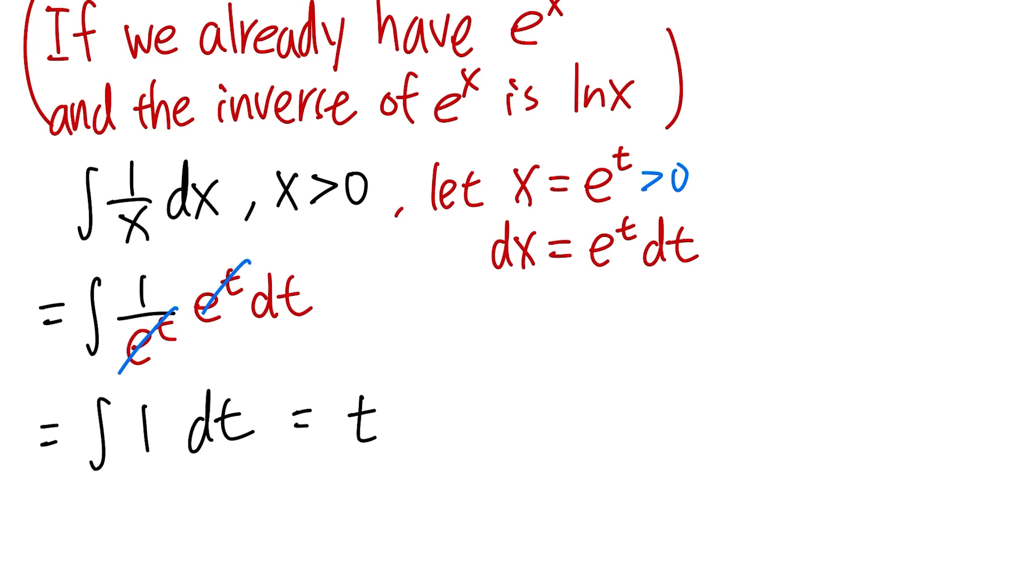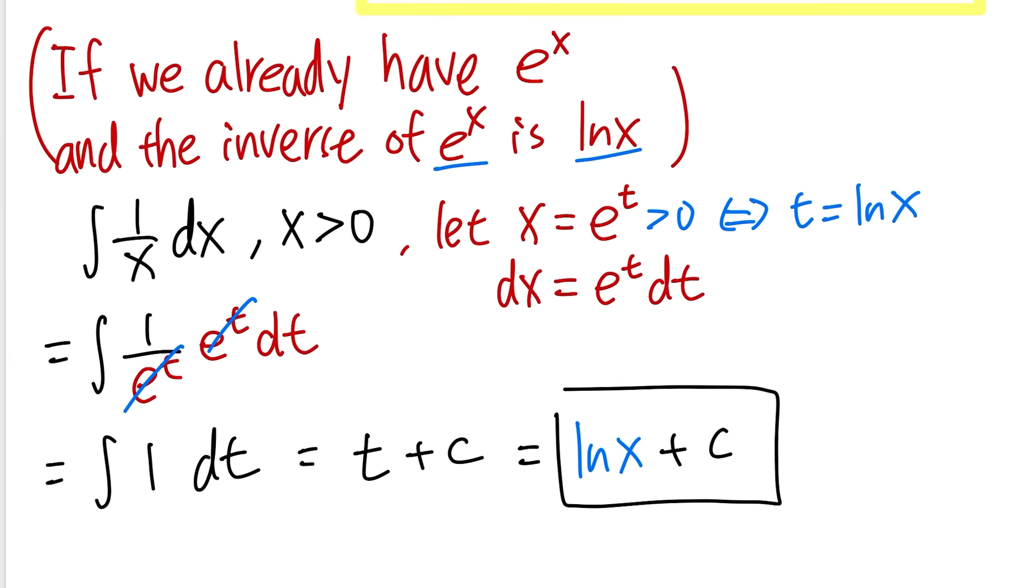What's the integral of 1 in the t world? Well, it's just t. And then, of course, you can put down the plus c. But we are not done yet because we also have to go back to the x world. But now have a look. We know x is equal to e to the t. And we know that the exponential function's inverse is natural log. So from here, we can say t equals natural log of x. And right here, we can just say that this is equal to ln(x) plus c. That's it. We are done. So this is how we can explain it.